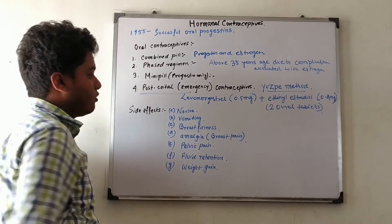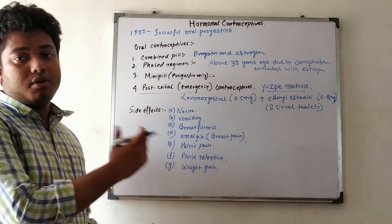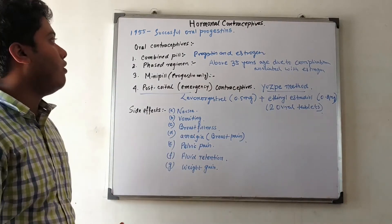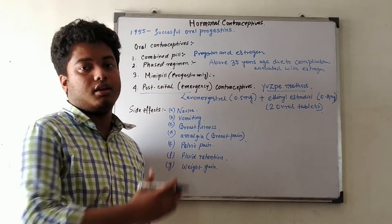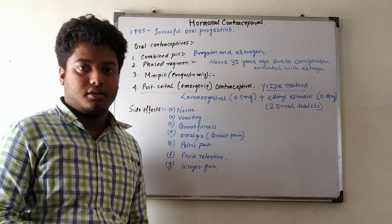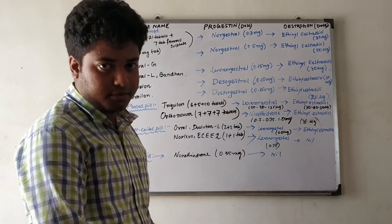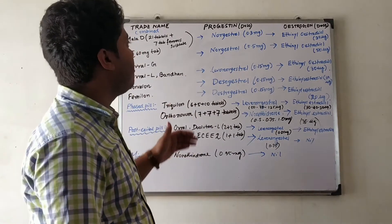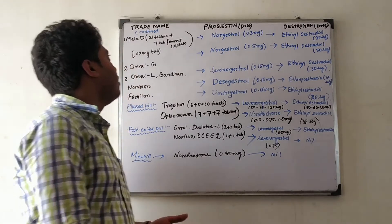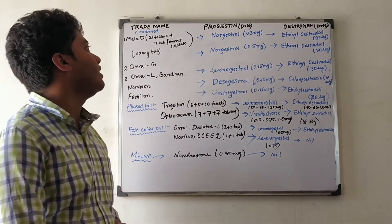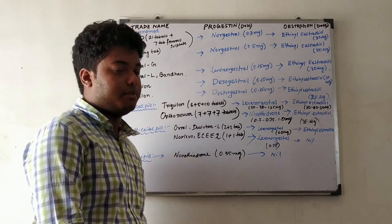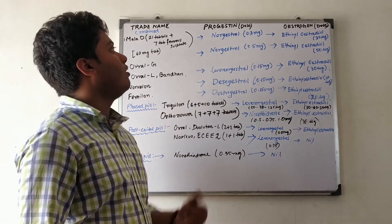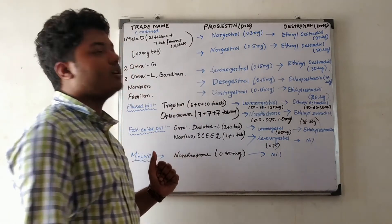There are many scientific strategies associated with this. We have a specific chart of drugs that should be administered. The first hormonal contraceptive was Mala-D. In this chart we have listed different drugs with their base names, doses of estrogen and progesterone. Mala-D consists of 21 active tablets along with 7 placebo tablets that need to be taken per month. The concentration of norgestrel is 0.3 mg and ethinyl estradiol is 30 micrograms.